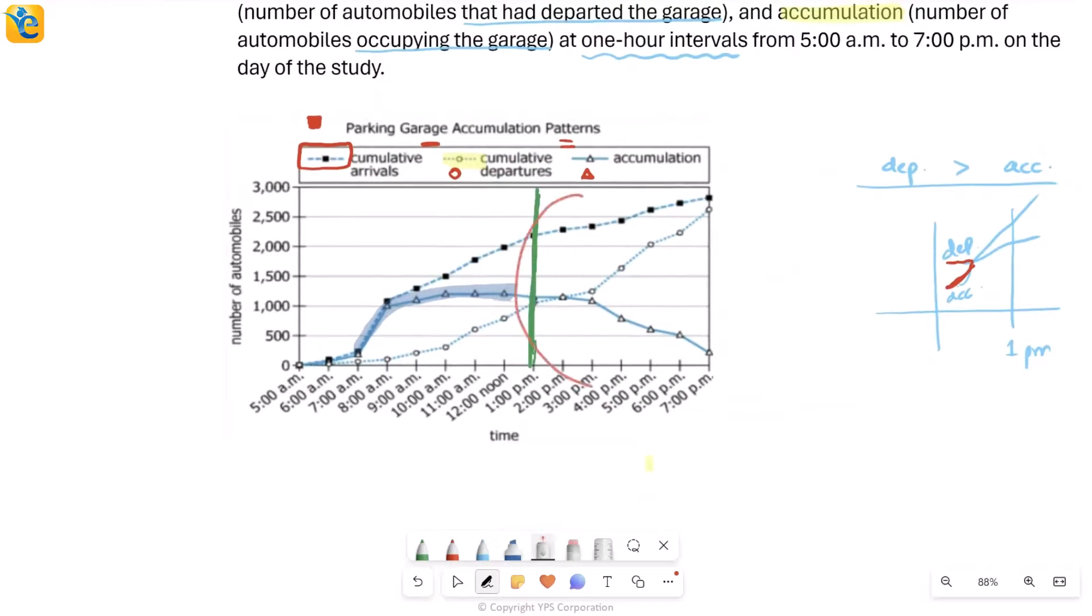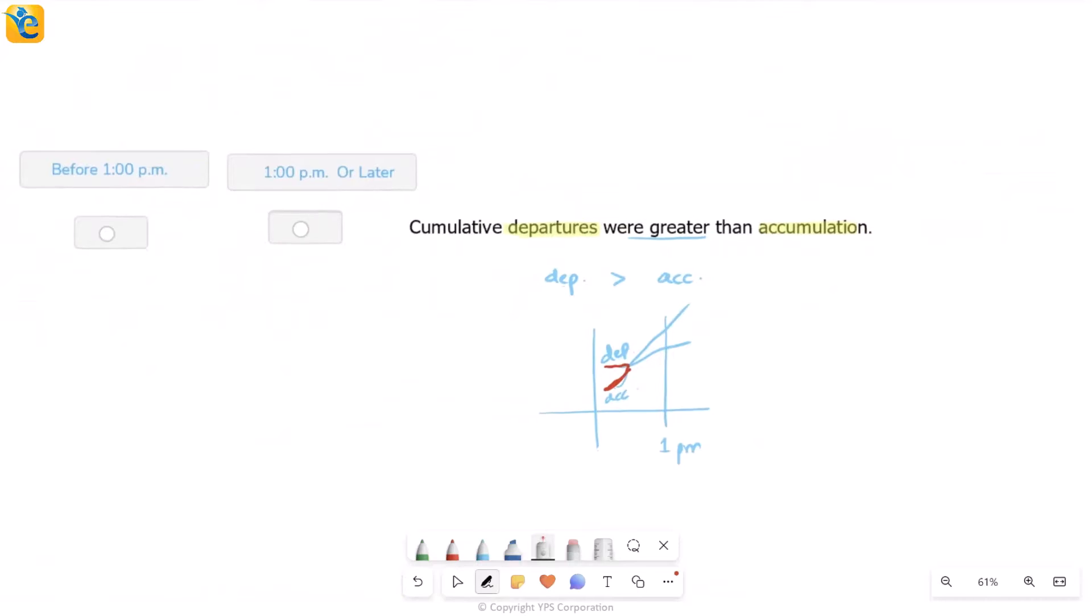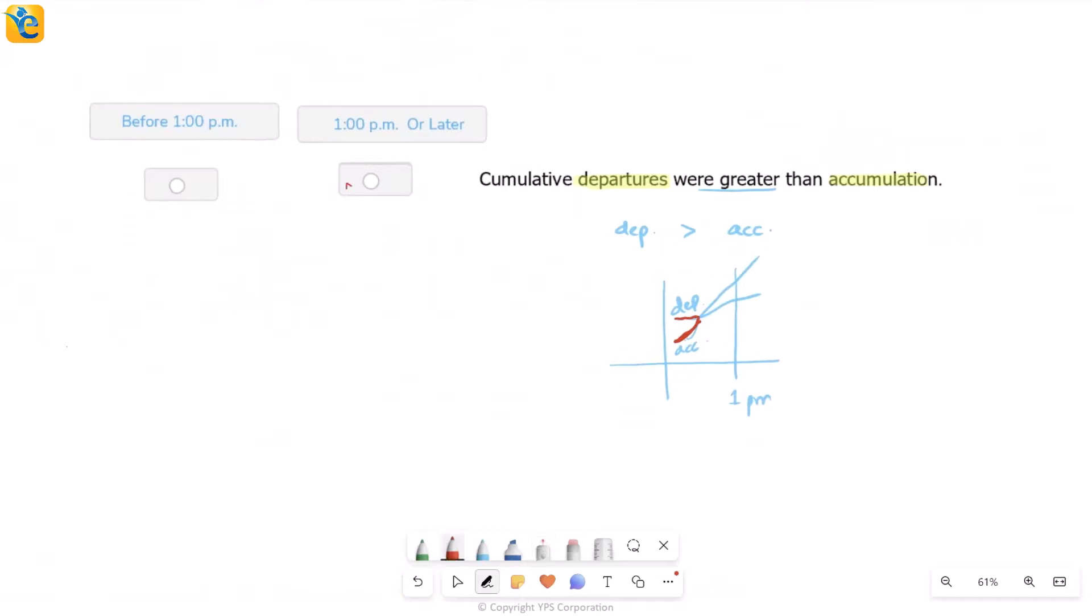It does happen later though, because they've said all of these conditions happen. So you will see that happening here after one. This is the first time you see where the departure line chart has come above the accumulation line chart. So this thing does not happen before 1 pm. And so for this one, we mark 1 pm or later as our answer. And that's it. Let's summarize everything we did.